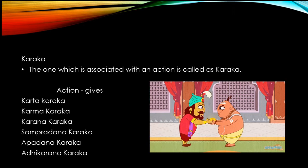The next one is Abhadana Karaka. Suppose he has taken this gold — the king or Raja has taken the gold from his treasury. So, from where did he take the gold? The answer is, from the treasury. It shows the separation from the treasury to the king. So, to show separation, you have the Abhadana Karaka.